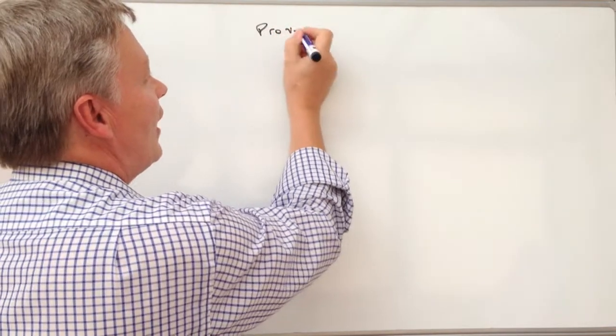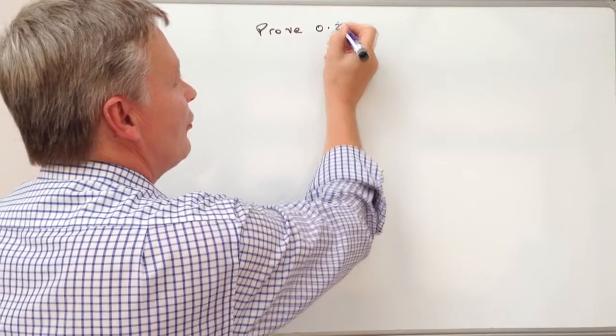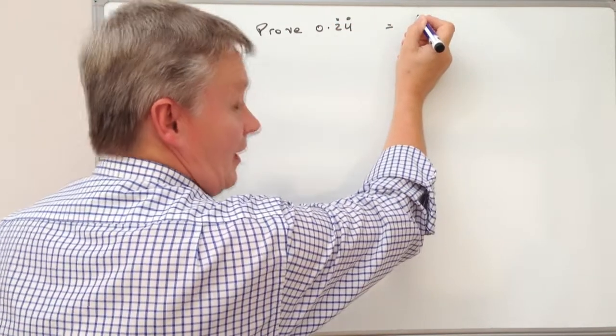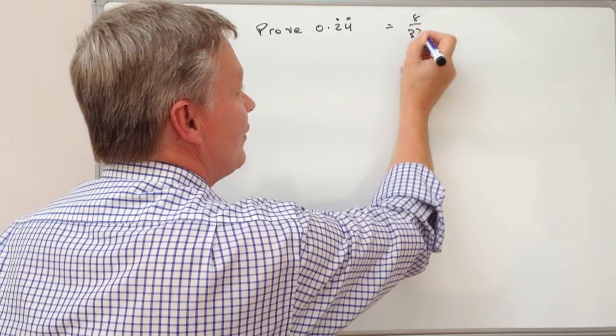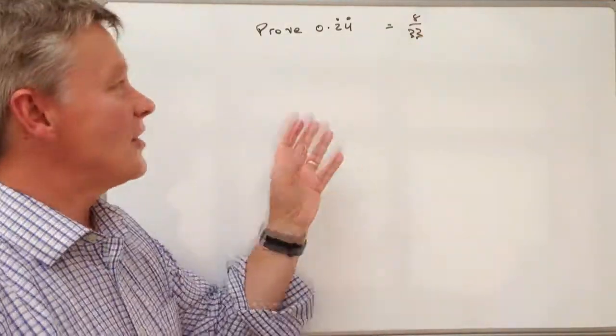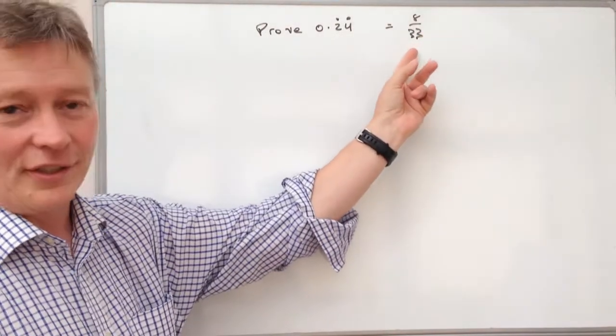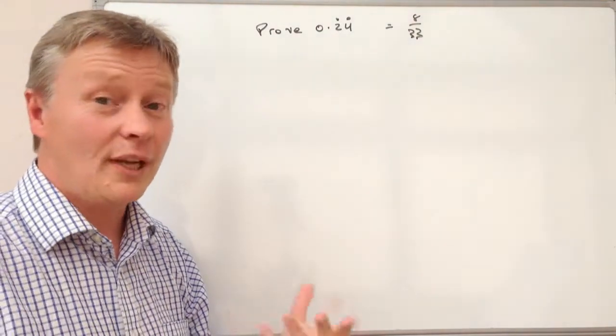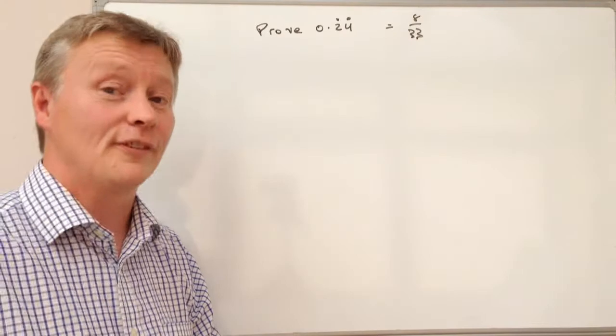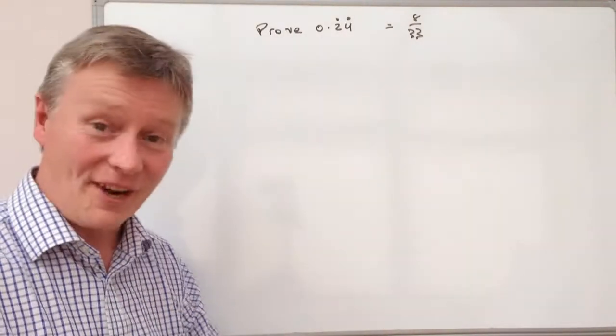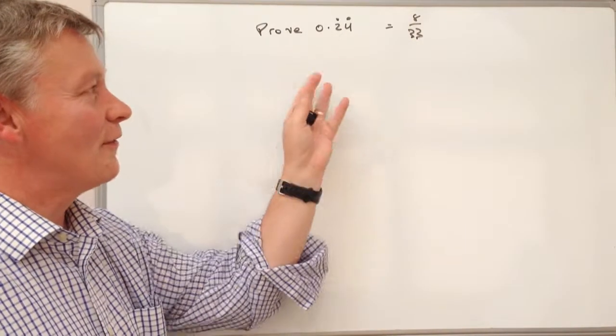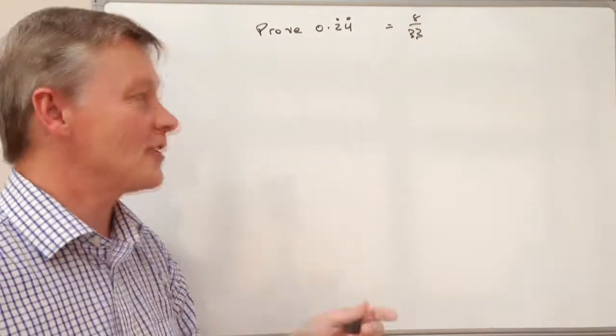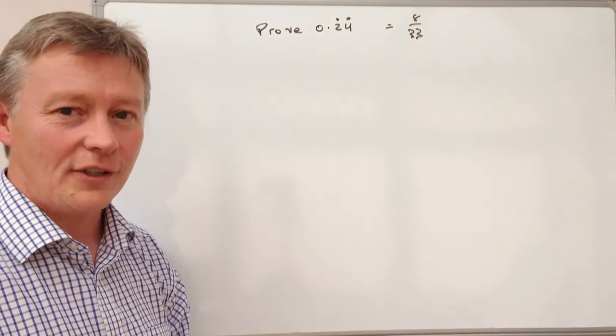And the question will be, prove that 0.24 recurring is the same as 8 over 33. Okay, so it's obviously a lot easier to deal with a fraction. The problem you've got here is this 0.24 recurring basically means 0.24, 24, 24, 24 and so on. So really what we've got to do is find a way of converting this recurring decimal to its equivalent fraction.